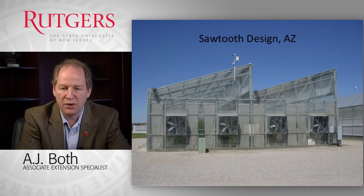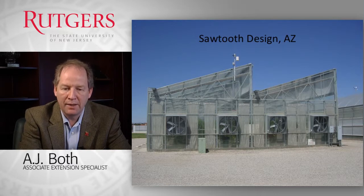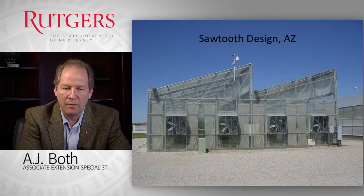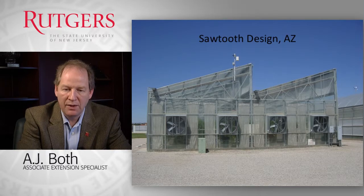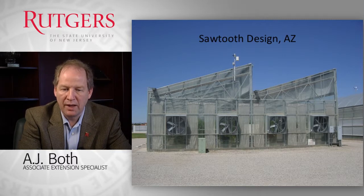In some cases we see this very special sawtooth greenhouse design in Arizona, which we like for warmer climates where we can use prevailing wind directions to improve ventilation. If the prevailing wind direction is coming from our left and blowing to the right, the air goes over the greenhouse roof and just as it detaches from the peak, it creates an area of low pressure and turbulence that helps suck out the warmer air inside. By designing this particular roof structure, we can improve the ventilation and provide better growing conditions for the plants.